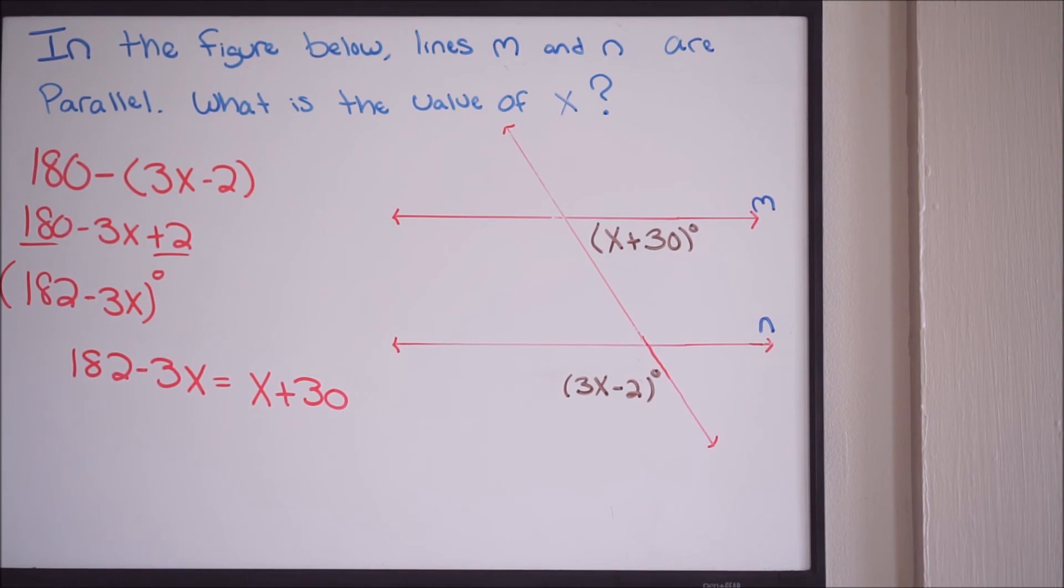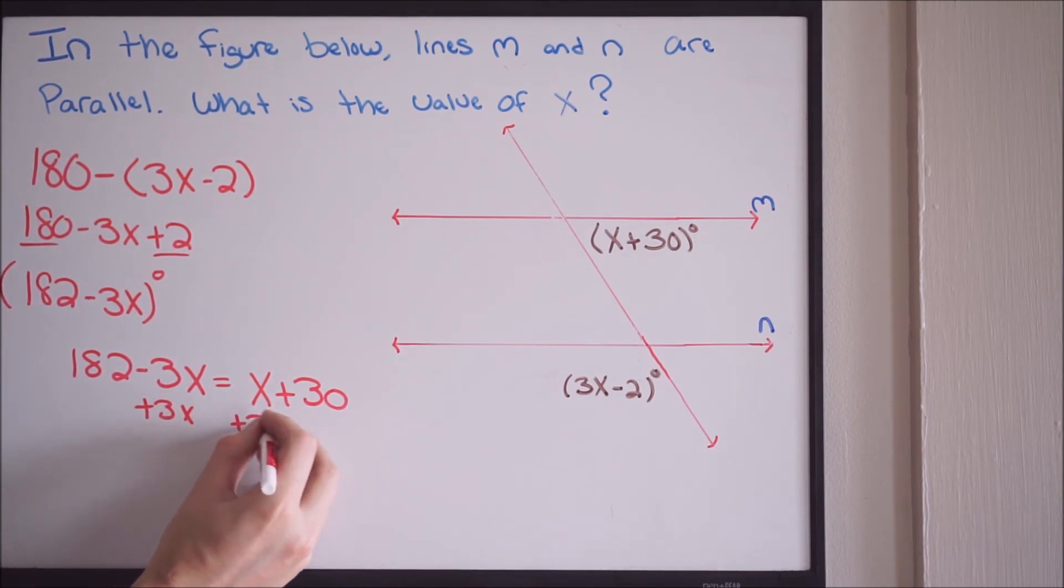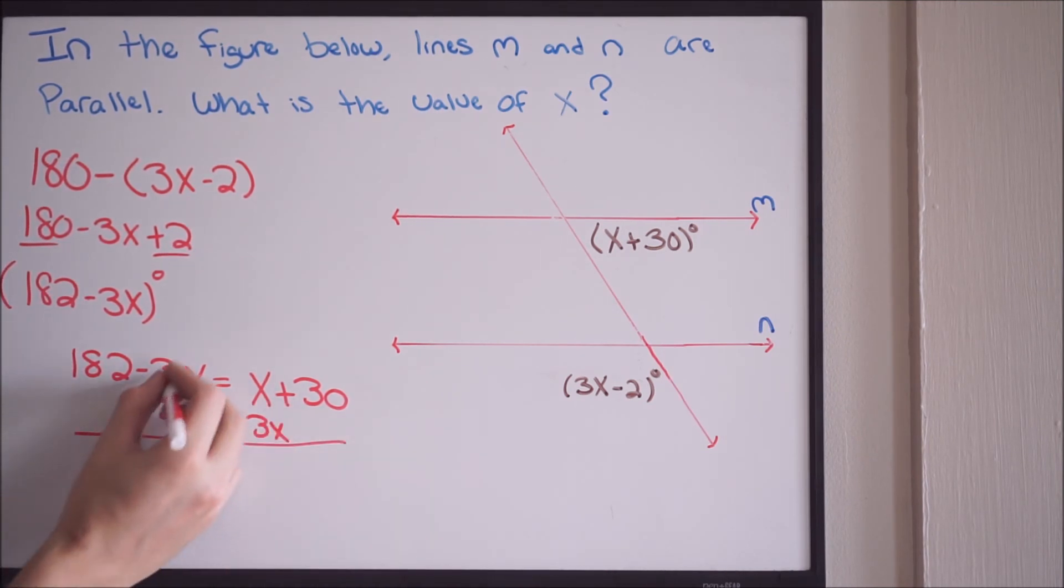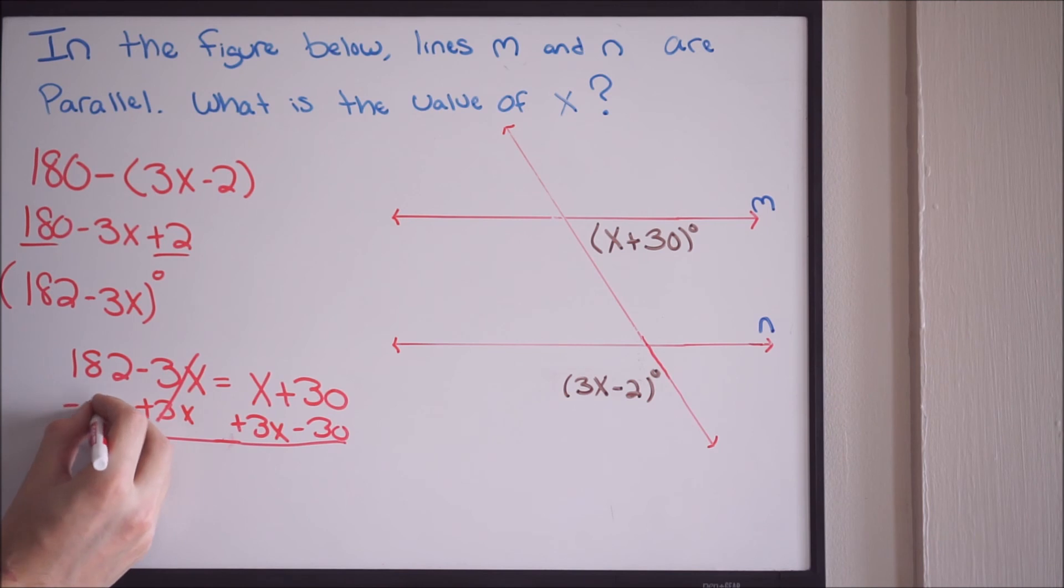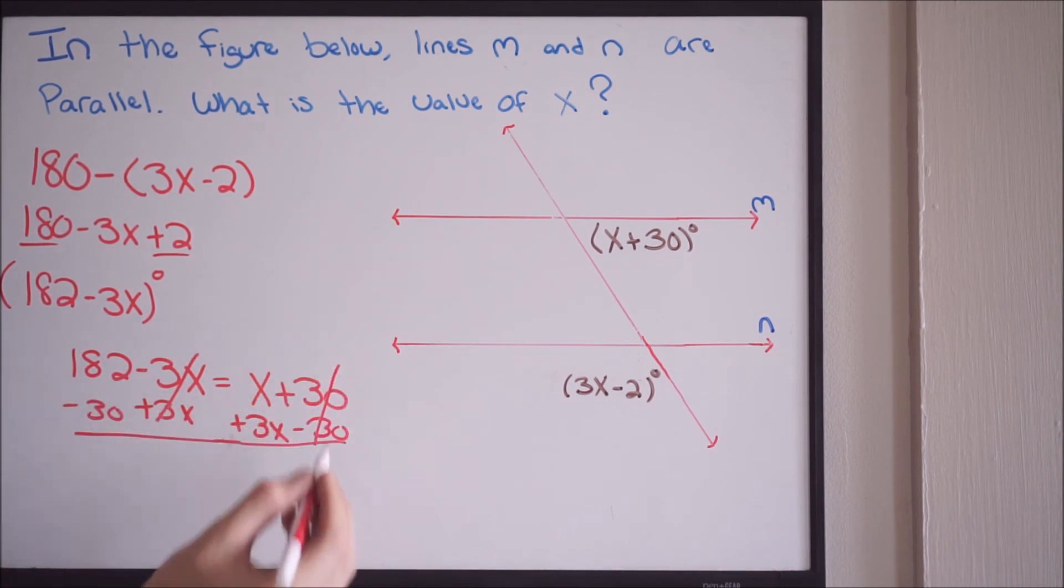And now all we want to do is go ahead and solve for x. So we're going to add 3x on both sides. This will cancel here. And let's go ahead and minus 30 on both sides. This will cancel here. So let's bring down our values here.